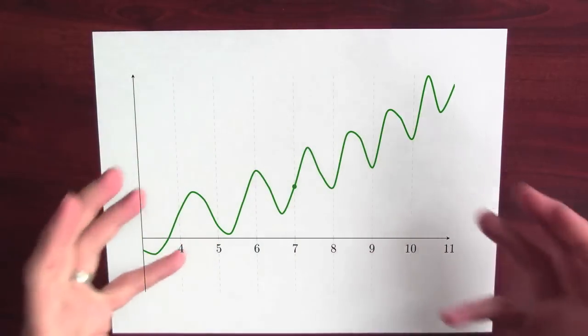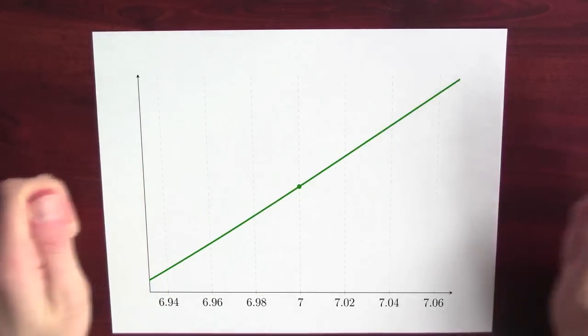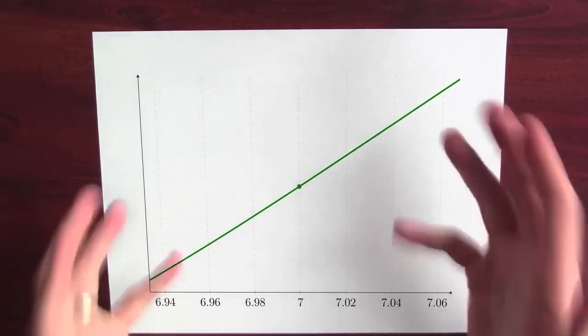Here's some terrible looking function. But it's differentiable, so if I zoom in on some point, the thing looks like a straight line. Calculus is all about replacing the curved object that we can't understand with straight lines, which we have some hope of understanding.